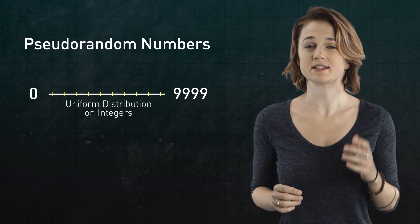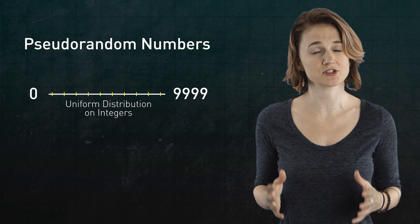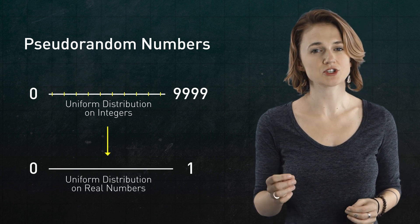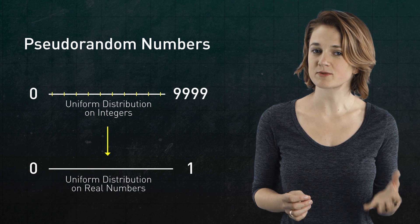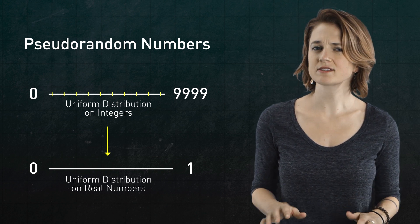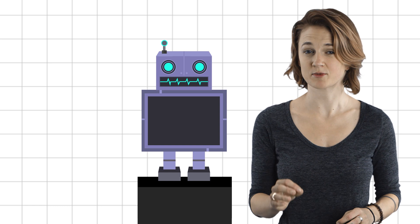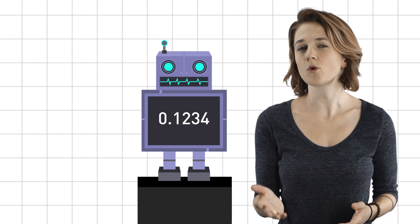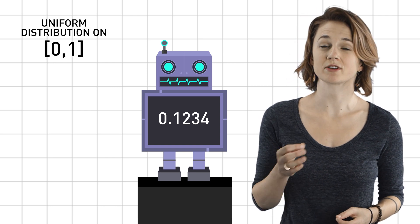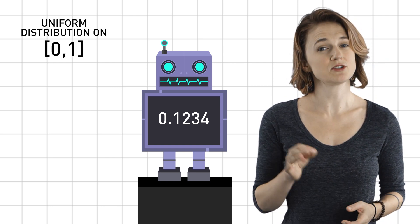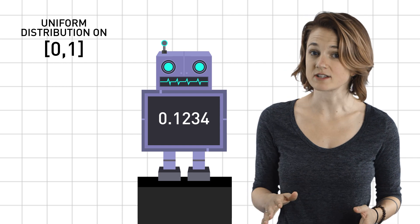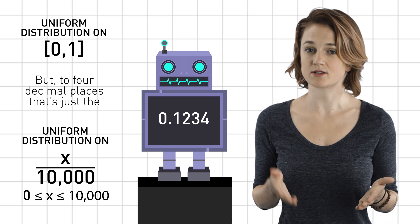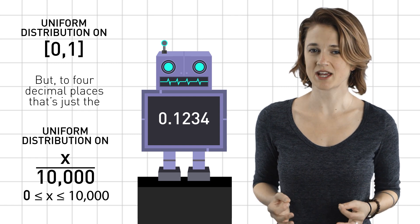But it's much more useful to have a sequence of numbers with the uniform distribution on the interval 0 to 1, which means that for any given term in the sequence, all the numbers between 0 and 1 are equally likely. Actually, since computers only have a certain amount of decimal precision, let's say, for a simplified example, that only the first four decimal digits matter, the uniform distribution on 0, 1 just means the uniform distribution on fractions of the form x over 10,000, where x is between 0 and 10,000. But that's easy to obtain.